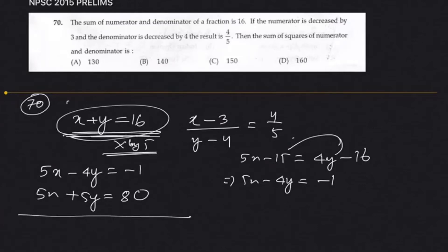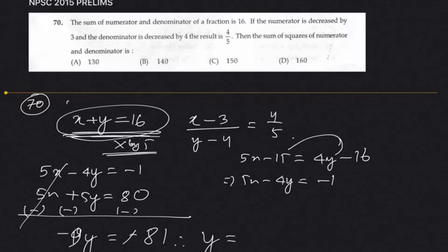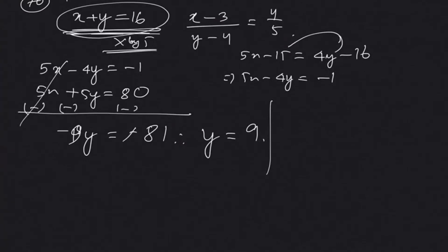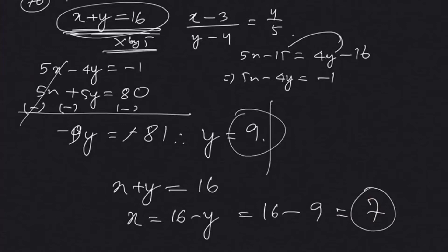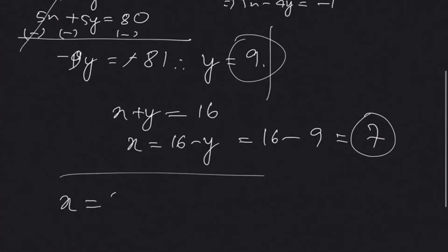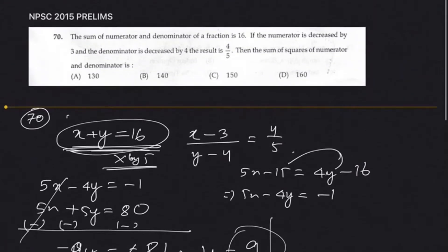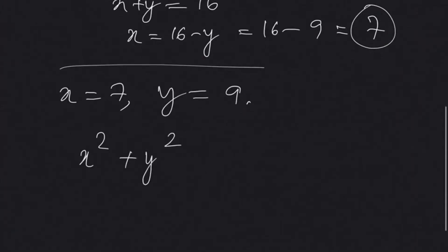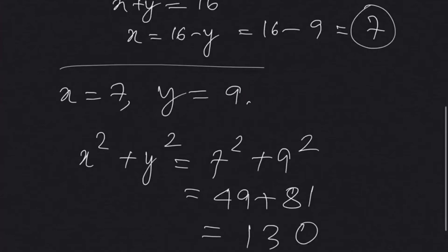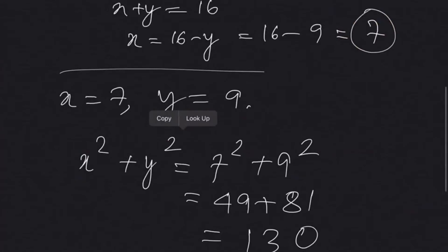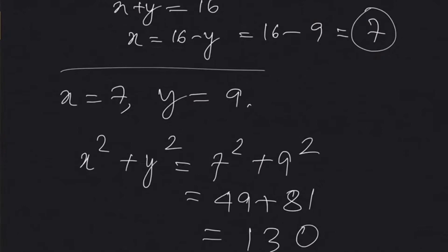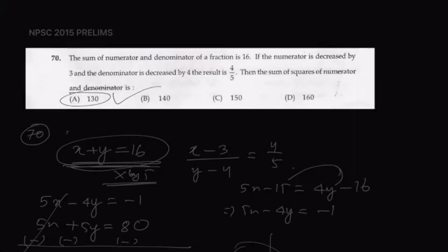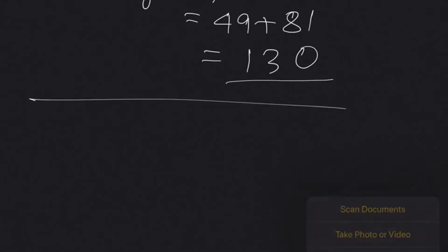Subtracting, we get minus 9y equals minus 81, therefore y equals 9. Since x plus y equals 16, x equals 16 minus 9, which is 7. So x equals 7 and y equals 9. The question asks for the sum of squares of numerator and denominator: 7 squared plus 9 squared equals 49 plus 81, which is 130. The answer is option A.